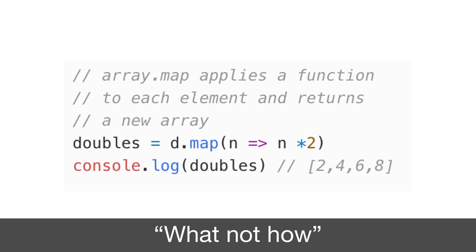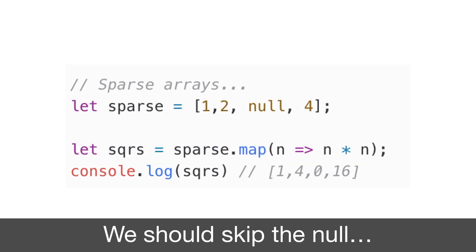There's a map function on arrays that can do this. We're able to map and write a really simple anonymous function inline. In the functional world, we talk about this as describing what we want, not how to do it. The first time with the for loop, we were instructing the computer how to iterate over the array. With map, we're just describing what we want — the values in this array, multiplied by two.